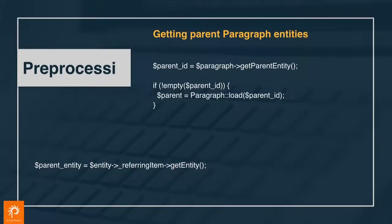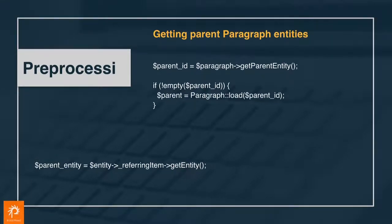If you, as a coder, need to jump from a deeply nested paragraph up to the parent paragraph, there are methods on the paragraph entity type - this is get parent entity, and you can keep going up that chain. One caveat though: eventually when you get to the top level, the get parent entity will return a non-paragraph, like a node. So before you start trying to call methods on the loaded parent, you should make sure it's an actual paragraph and not a node, a block, a taxonomy term, or something other than that.